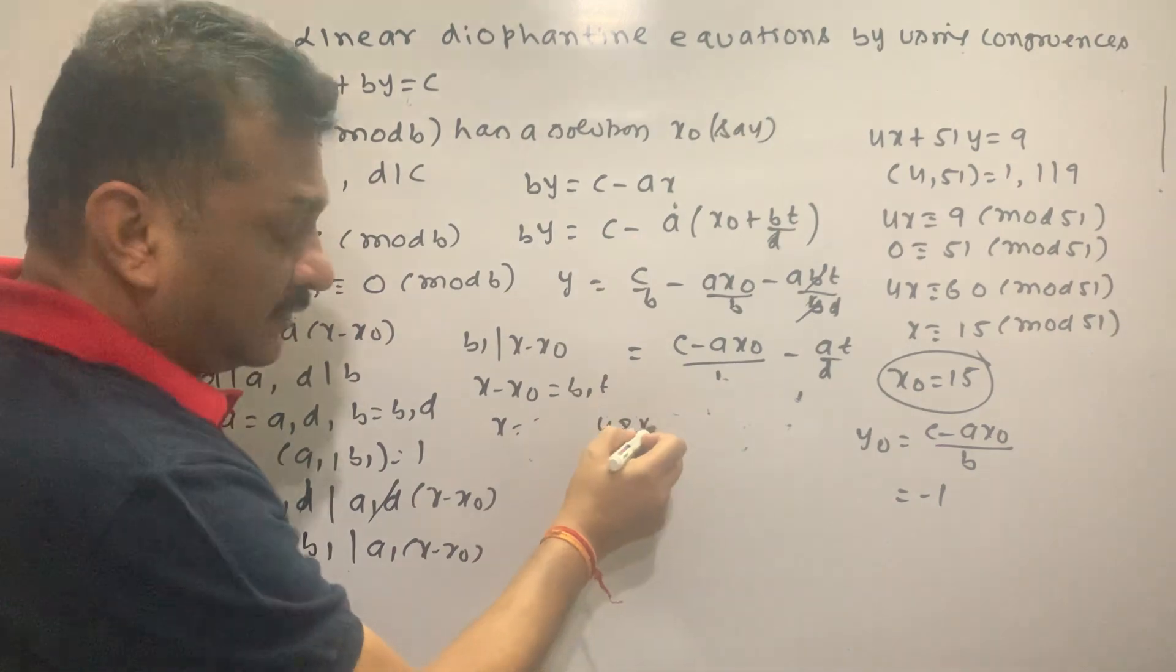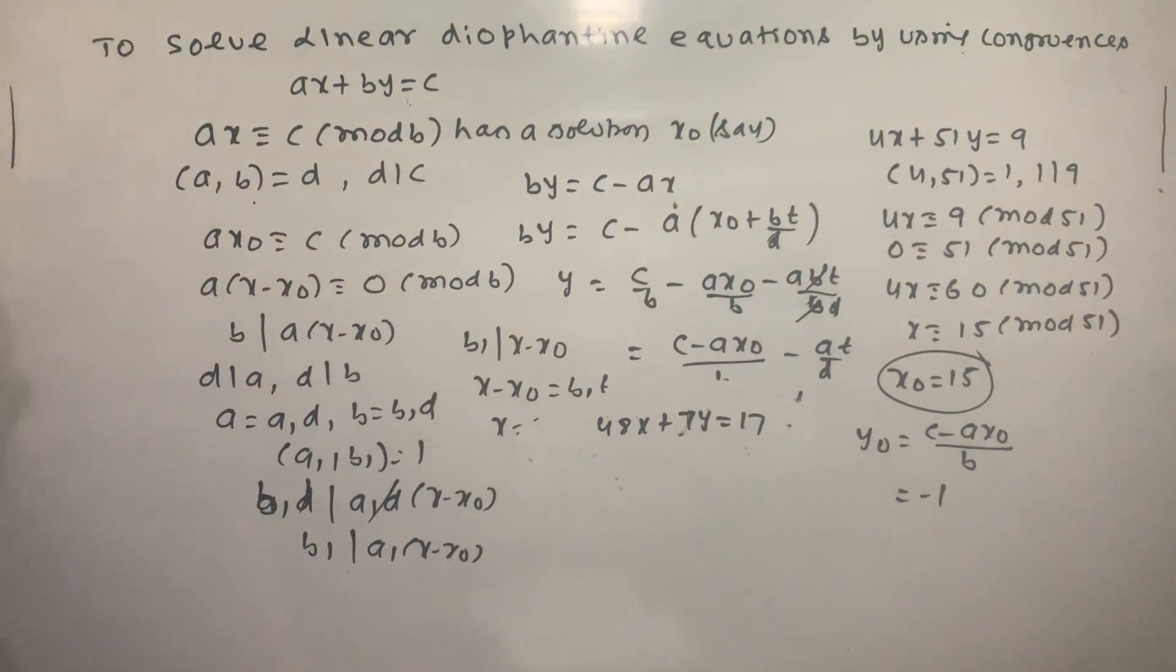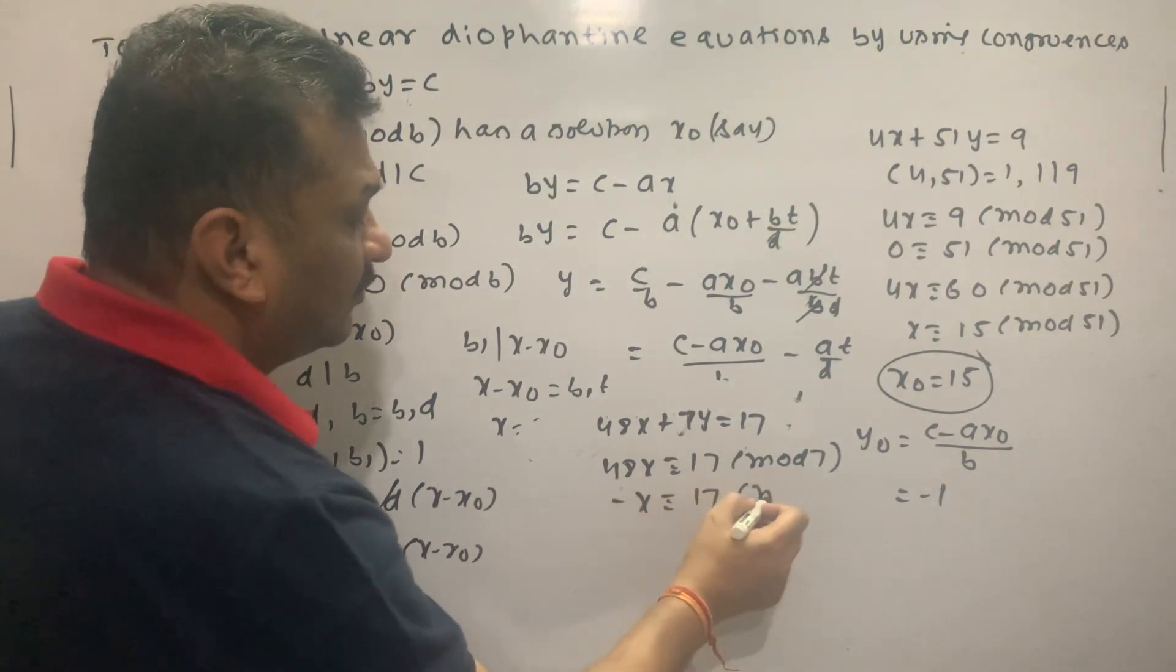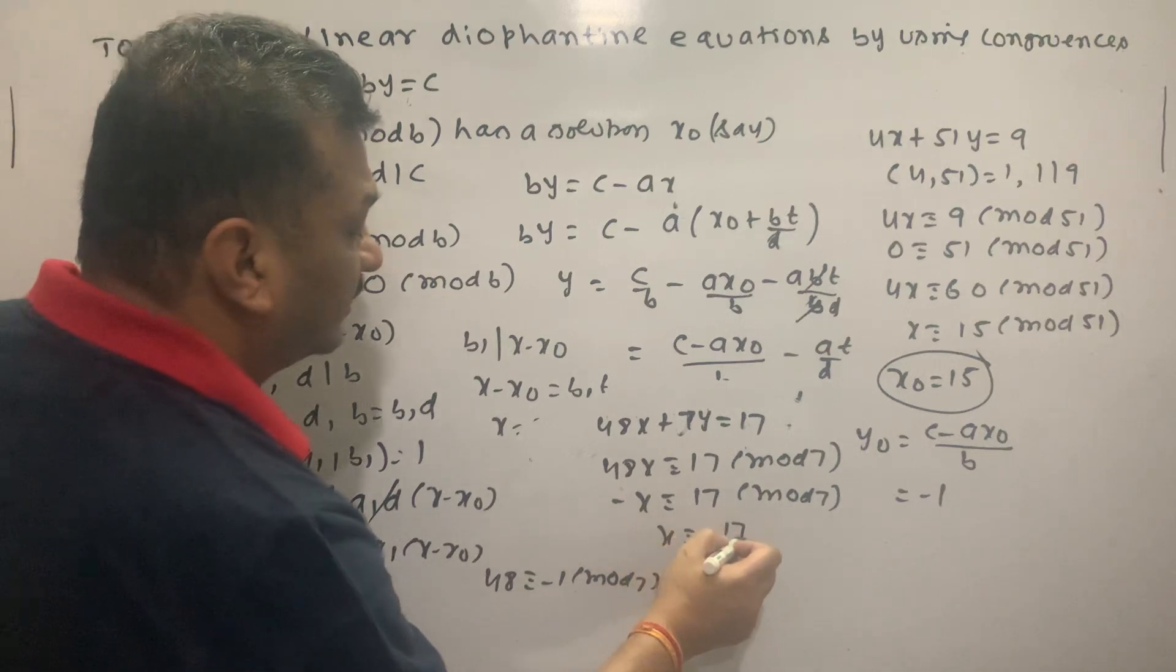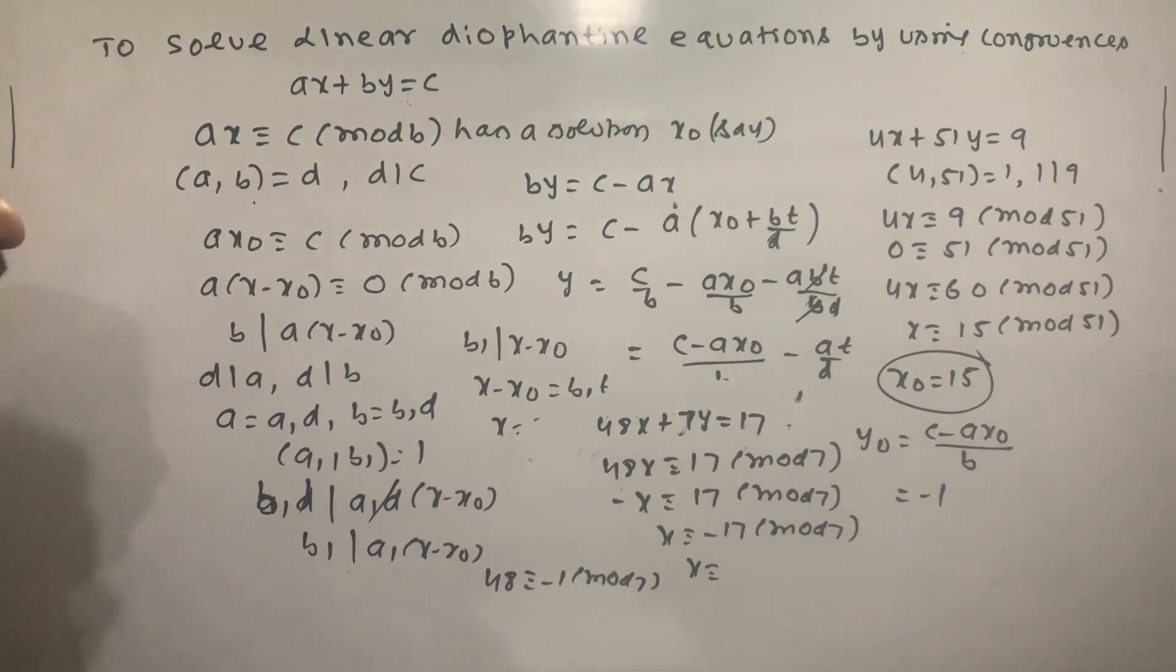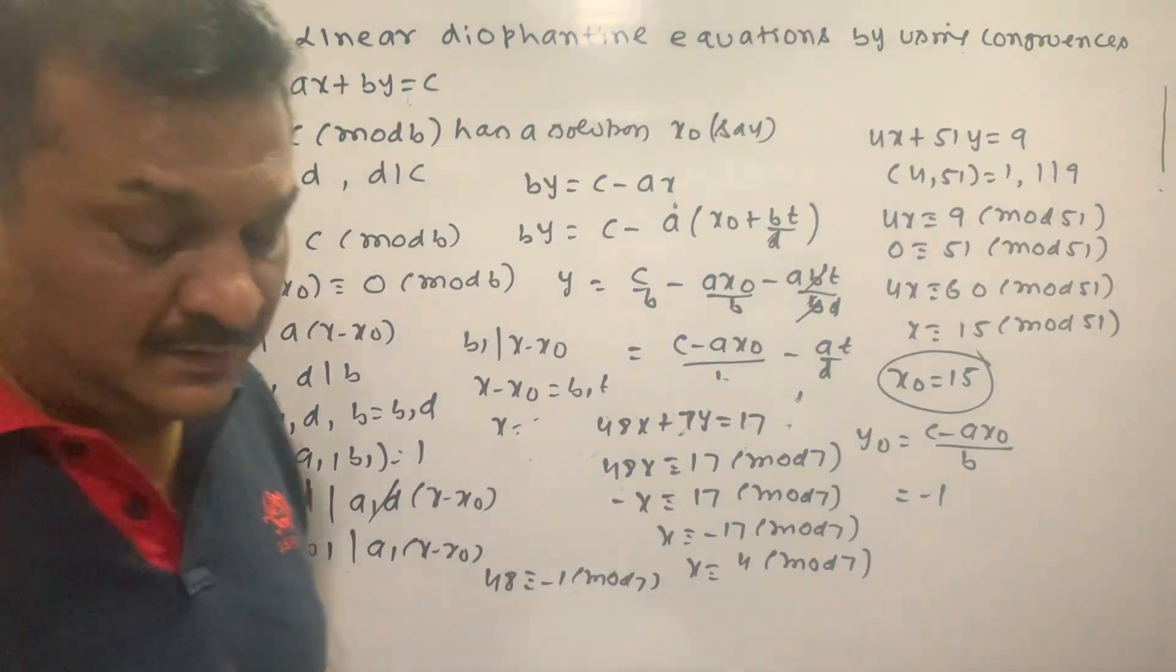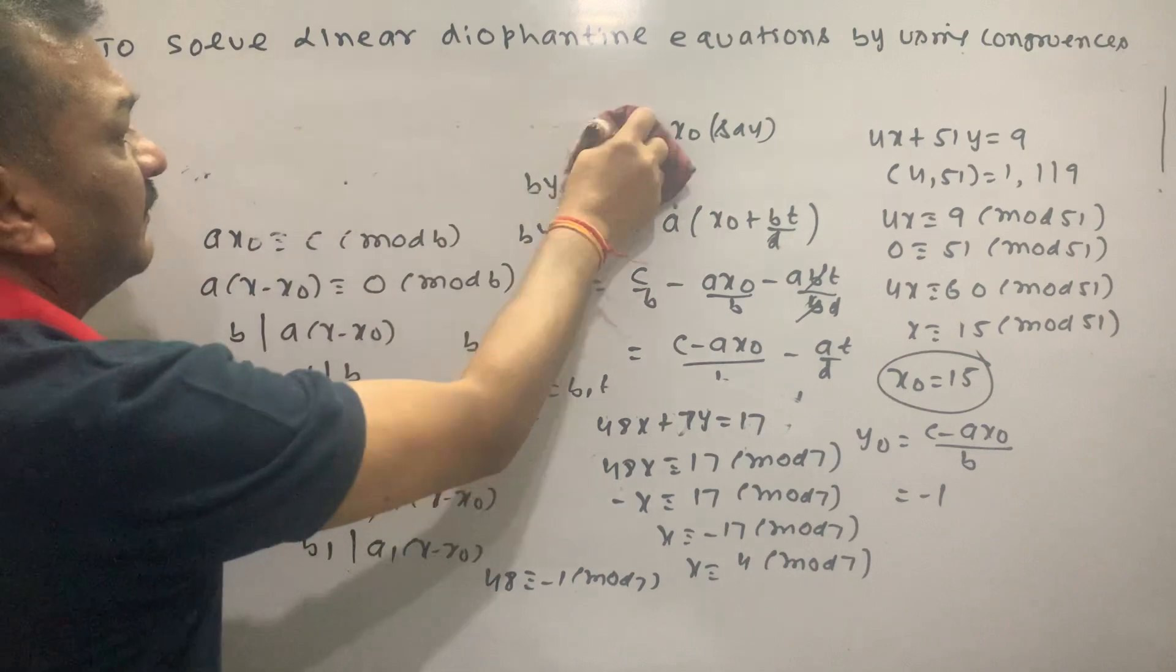Another example: 48X plus 7Y equal to 17. We write 48X congruent 17 mod 7. 49X congruent 21 mod 7.